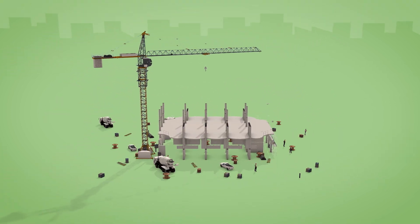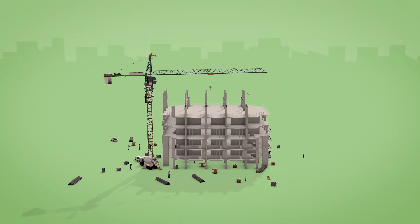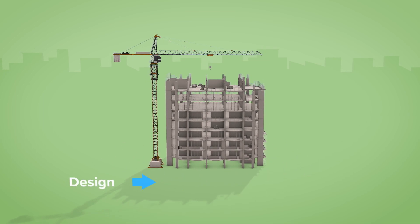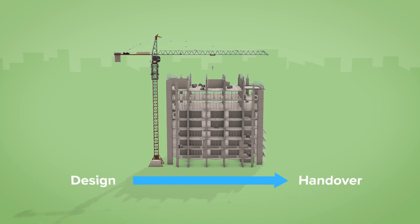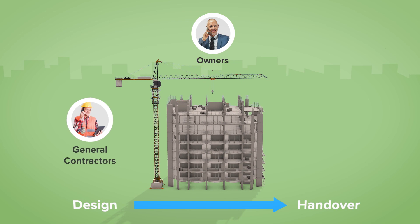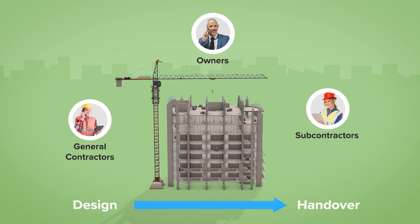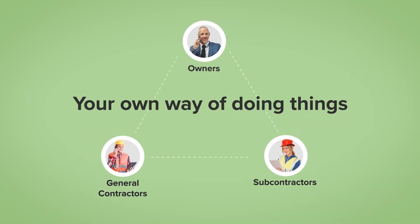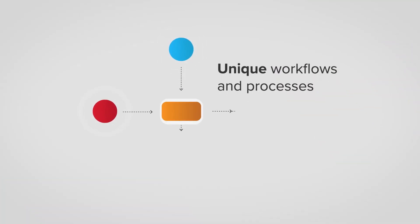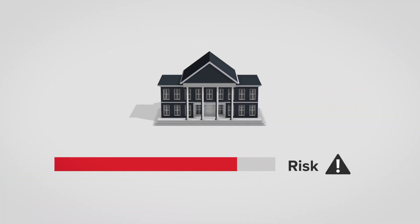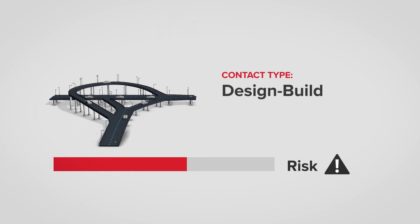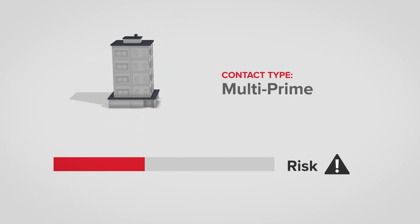Let's face it, construction is a complex process with a lot of moving parts. Managing large capital projects from design to handover is challenging for owners, GCs and subcontractors alike. That's why being the best often means you have your own way of doing things — the unique workflows and processes that your team has developed help to mitigate risk across a broad range of contract types and provide a competitive advantage for your organization.